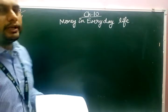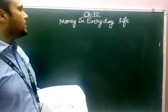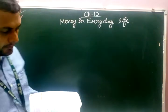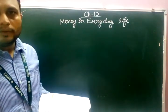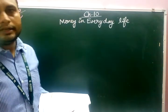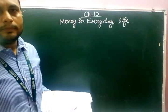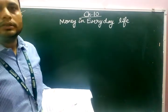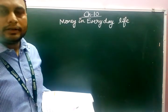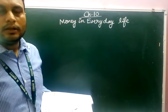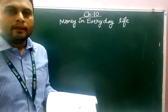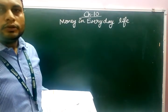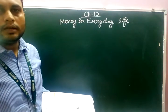Good morning, everyone. Today we are going to continue Chapter 10: Money in Everyday Life. Today we will discuss bills. In your daily life, when you buy something from a supermarket or any type of market, the shopkeeper provides you a bill. In the bill, all the details are there — what items you purchased, how much quantity, what is the cost, and what is the amount. Below all of that, there is a total of all items and amounts.